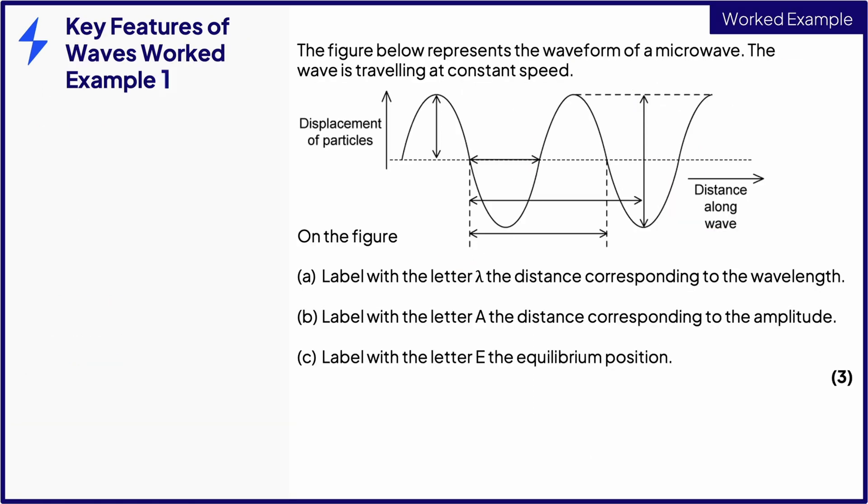The figure below represents the waveform of a microwave. The wave is travelling at constant speed. On the figure, A, label with the letter lambda the distance corresponding to the wavelength. B, label with the letter A the distance corresponding to the amplitude. And C, label with the letter E the equilibrium position, for three marks.